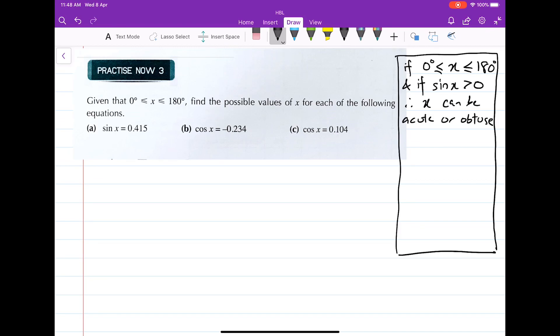Now for the same values of x between 0 degrees and 180 degrees, if the cosine of x is positive, therefore x is an acute angle. But if the cosine of x is negative, less than 0, therefore the angle x is obtuse.